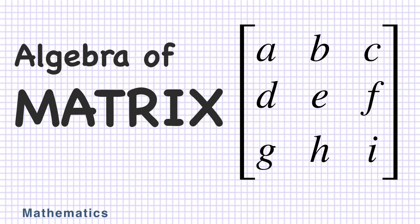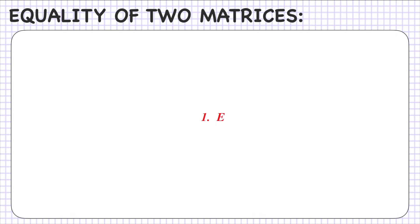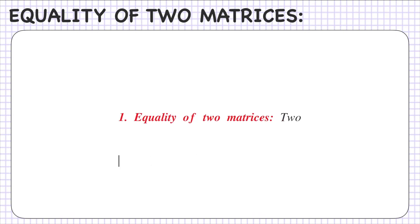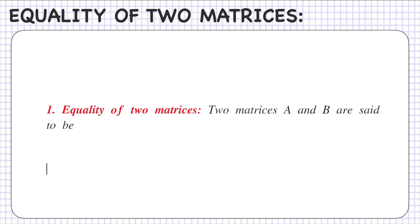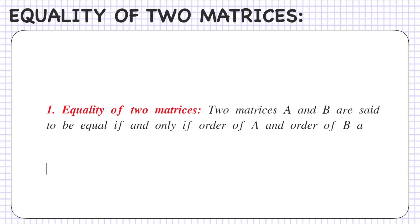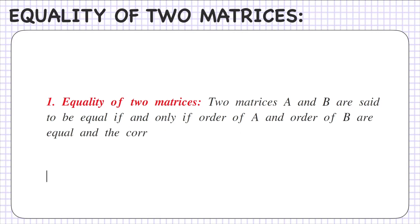As in the previous video we have already learned about matrices, now let's learn algebra of matrices. The first topic is equality of two matrices. Two matrices A and B are said to be equal if and only if the order of A and order of B are equal, and the corresponding elements of A and B are equal.